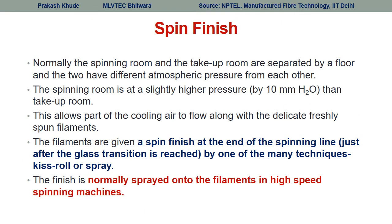The next component of the melt spinning system is the spin finish. Spin finish is applied onto the filament by different techniques. The spinning room and take-up room are separated by a floor, and the spinning room is maintained at a higher temperature than the take-up room. This allows cooling air to be drawn along with the delicate spinning filament. Spin finish is applied by techniques such as kiss roll or spray technique.